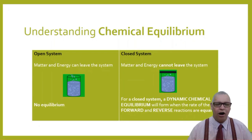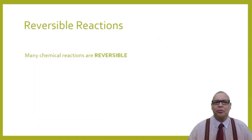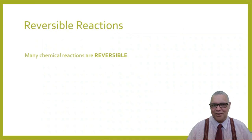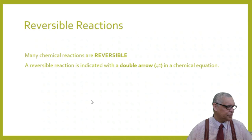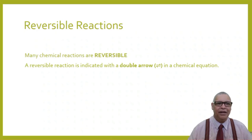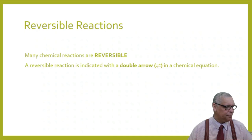Dynamic chemical equilibrium is formed when the rate of the forward reaction and the rate of the reverse reaction are equal. We need to talk about reversible reactions — many chemical reactions are reversible. Reversible reactions are indicated with a double arrow in a chemical equation. The top arrow represents the forward reaction and the bottom arrow represents the reverse reaction.